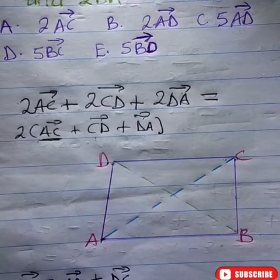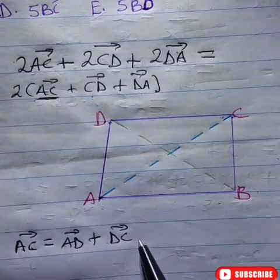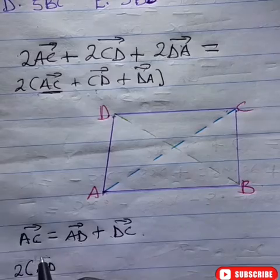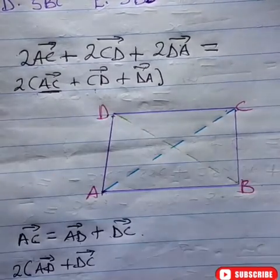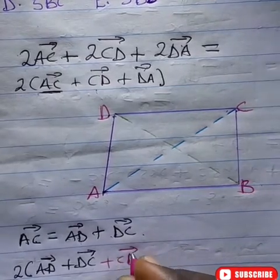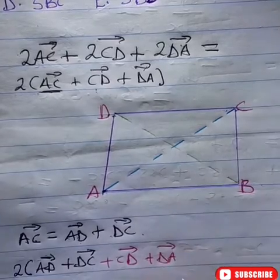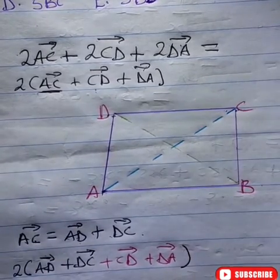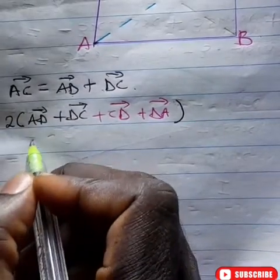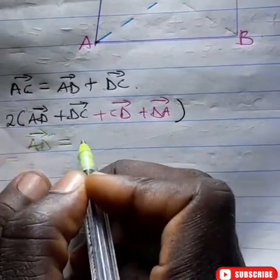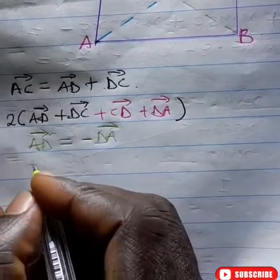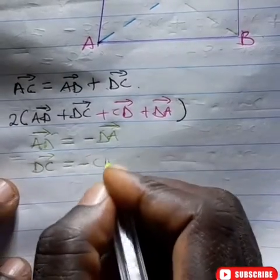So now, I'm going to replace AC with AD plus DC. So therefore, I'm going to have 2 into, so AC now is going to be AD plus DC. Then I have plus CD plus DA. Now from this, so from this, AD is equal to negative DA or vice versa. Or you can say DA equals to negative AD and DC is equal to negative CD or vice versa.